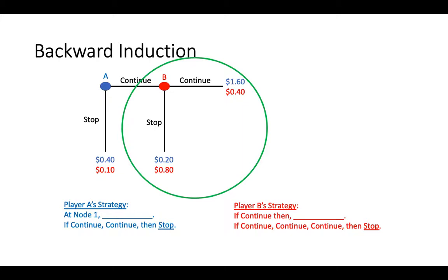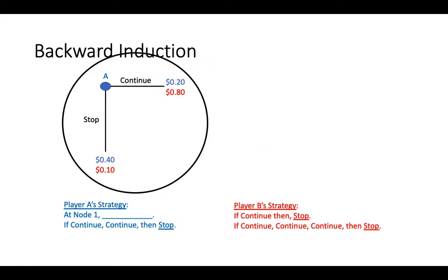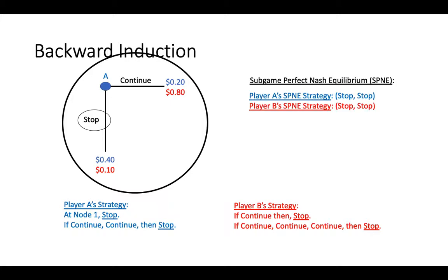Once again, Player B's optimal action is to choose Stop. In the last subgame, Player A's optimal action is also to choose Stop. We have now found the subgame perfect Nash Equilibrium of this game — it involves both players choosing Stop at every decision point in the game.